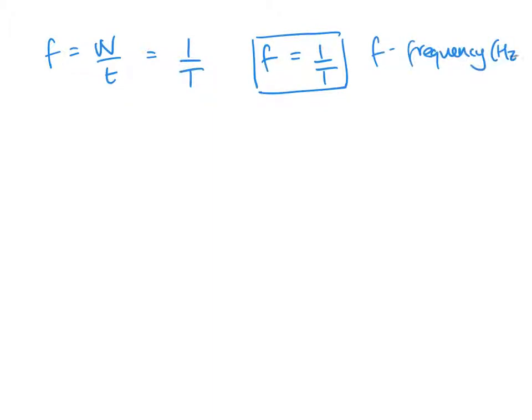If we look at the special case of f equals n over t, when n is one wave, then n becomes one. But we use a special symbol for the period—it's not just any old time. So we use a capital T for that. That ends up with our next formula: frequency and period are linked together, because f equals one over T. f stands for frequency measured in hertz, but that capital T stands for period measured in seconds. It's just a special case of f equals n over t, looking specifically at one wave.